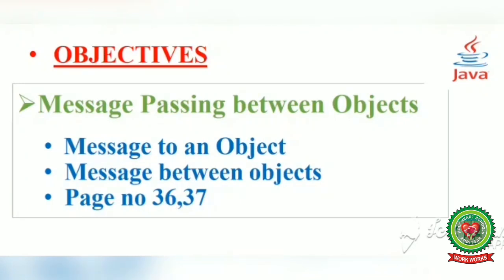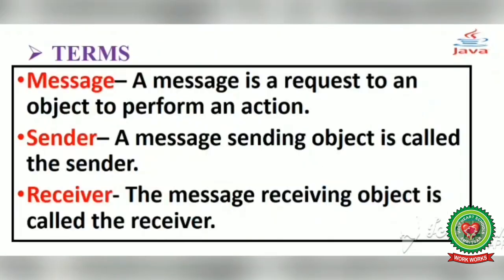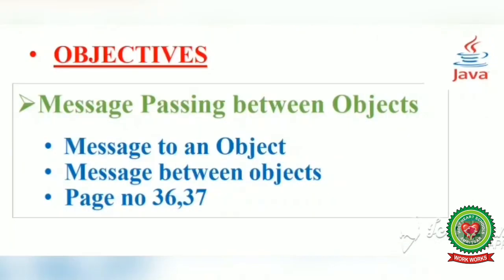Today we discussed the topic of message passing between objects — how a class sends a message to objects and how different objects send messages to each other. We also covered the terms message, sender, and receiver. Revise these terms carefully, follow the examples, and in the next session we will continue with the next pages. Thank you very much!